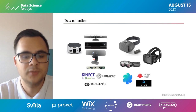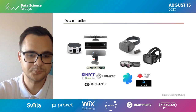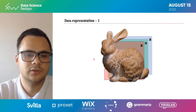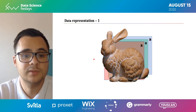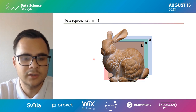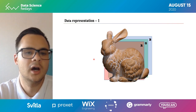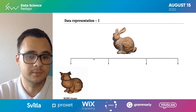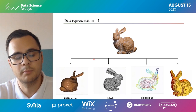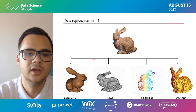Another area where 3D data is everything is augmented reality, but we won't talk about this today. Now let's look at how 3D data can be represented. We all know the 2D image, which is basically a combination of RGB values for each pixel. But in the 3D world it can have multiple representations: the first one is RGB plus depth, the second is a mesh and point clouds or voxel grids. During this talk we will be mostly focused on two representations: meshes and point clouds.